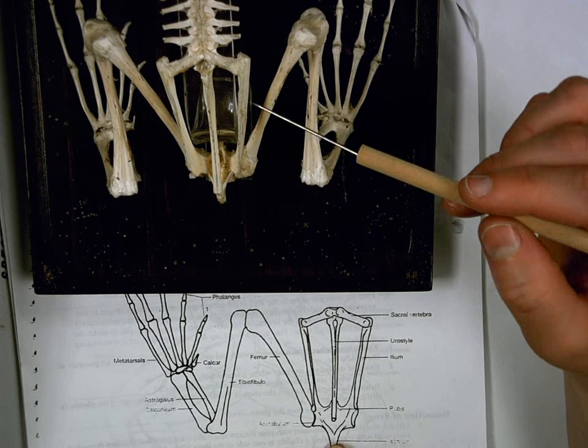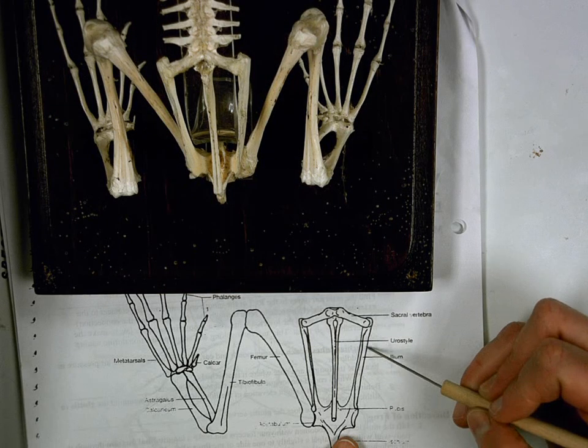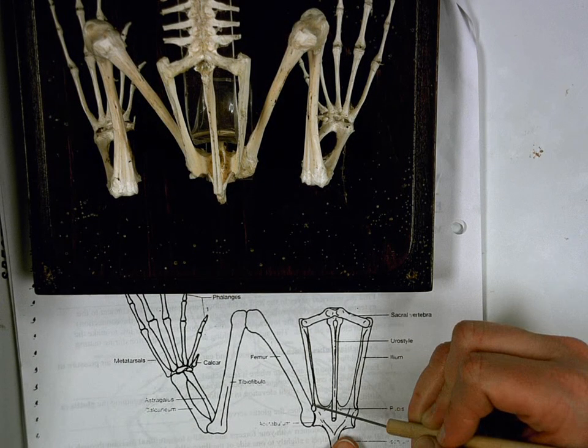So again, if we're comparing it to our diagram, we have these two large hip bones. If we look at our diagram here, those would be these two large bones here, which are the ileum bones.